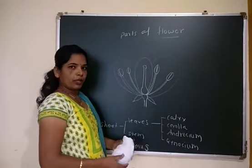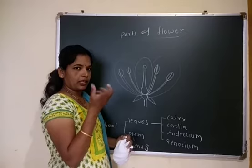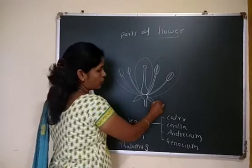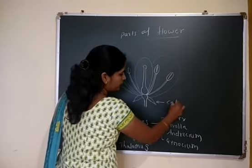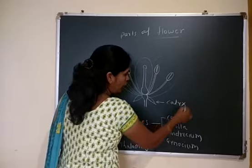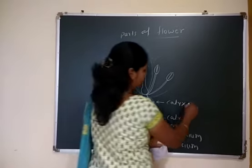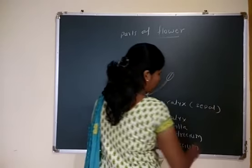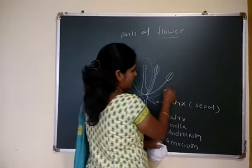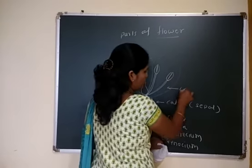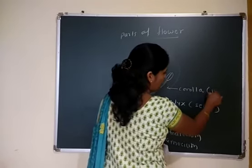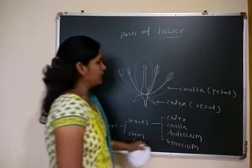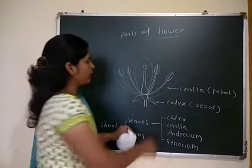So four whorls are there: calyx, corolla, androecium, and gynoecium. These whorls have a cyclic arrangement on the thalamus. The outermost whorl is calyx, and an individual member is known as sepal, which are green in color. Inner to calyx is corolla, whose individual member is called a petal, which are colorful, fragrant, and help to attract insects.